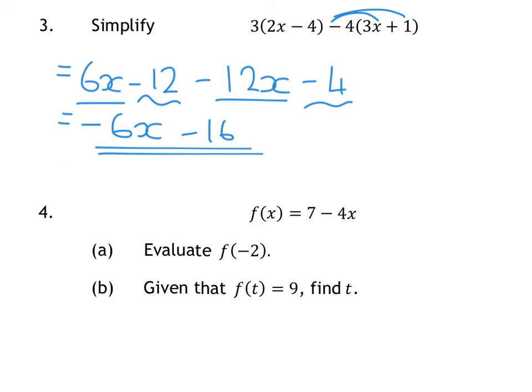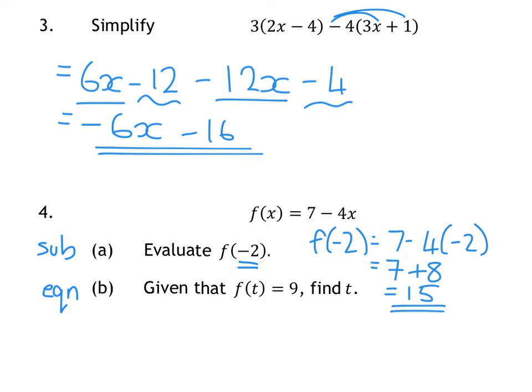Question 4 is a functions question with 2 parts. Part A is a substitution, and part B is an equation. For part A, you'll notice x has been replaced with minus 2, so that's what we're doing. We're replacing x with minus 2. So you've got 7 take away 4 times minus 2, which is 7. Minus minus there gives you a plus 8, which is 15. So part A is 15.